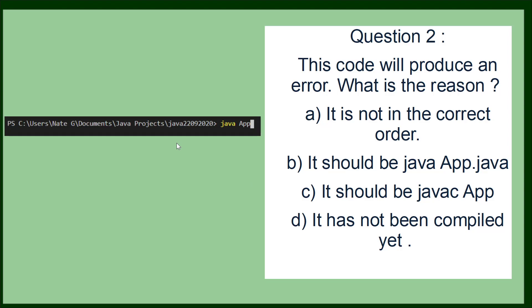The second question is looking at how you can compile and run a Java program within the terminal or the command prompt. So this code will produce an error. What is the reason? The reason why it produces that error is that it has not been compiled yet. So there are two steps to running Java code from the terminal. If you need more information about why and what those two steps are, have a look at my playlist regarding the Java terminal.